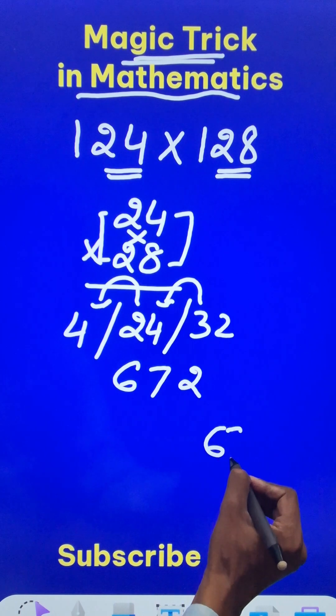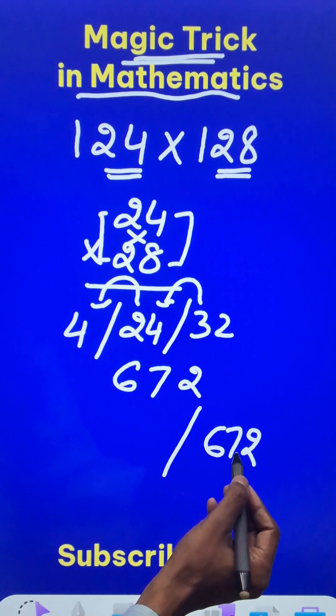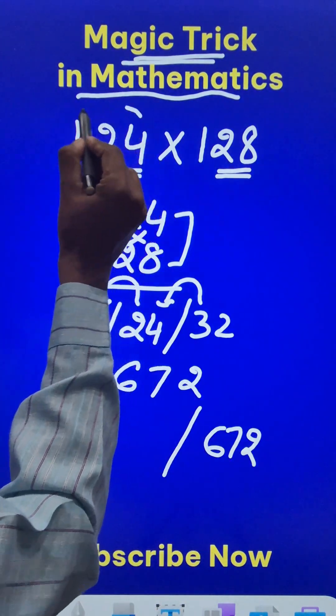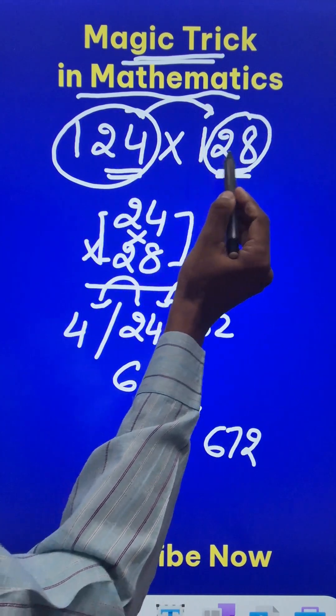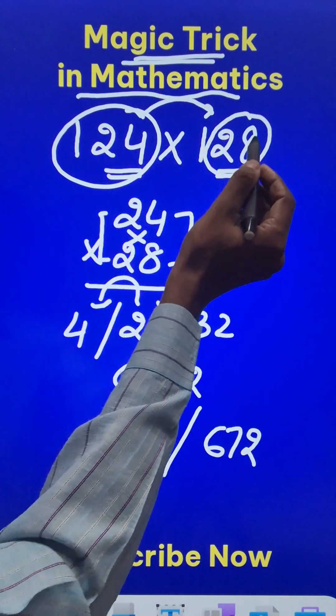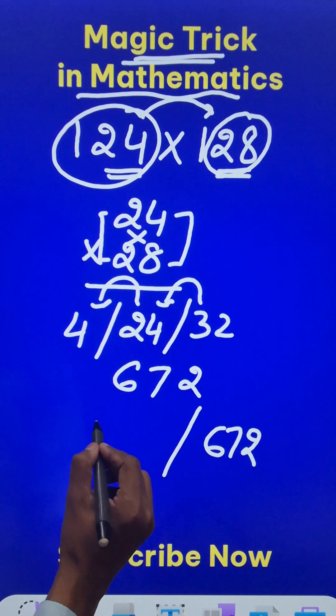So I will write a 672 in the latter half of the answer. And the first half, either add 124 and 28 like this or add 128 and 24. You get the same thing and that number is 152.